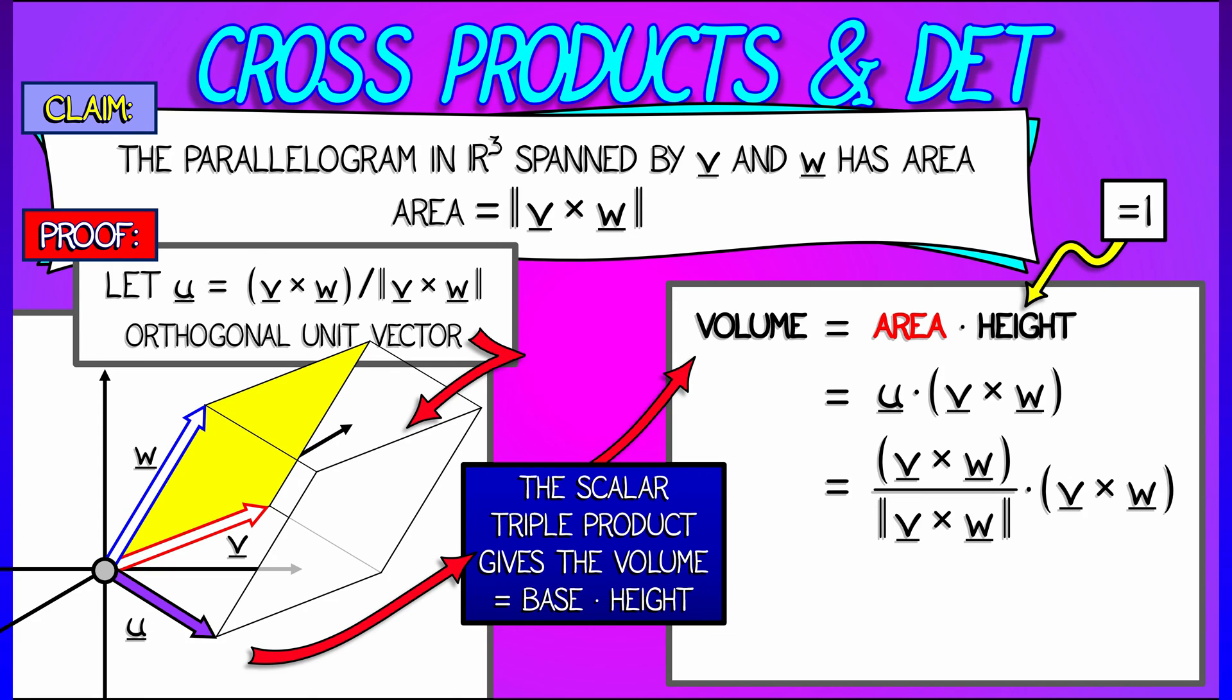When I do that dot product, what do I get in the numerator? I get v cross w dot v cross w. That is the length of v cross w squared. Dividing out by the length of v cross w gives me the length of v cross w to the first power.